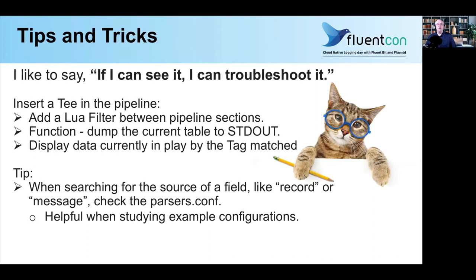Here are a few tips and tricks. I like to say: if I can see it, I can troubleshoot it. In this case, I'm creating a T for the pipeline — you can add a Lua filter between pipeline sections and write a function that dumps the current table to standard output, displaying all the tags and keys in play. Very helpful for getting a feel for what's going on. The second tip: when looking at configuration examples in documentation, you'll see fields with no definition. Having been bitten by this, check the parsers.conf file — you'll probably find the definition there.